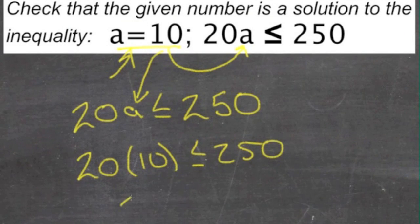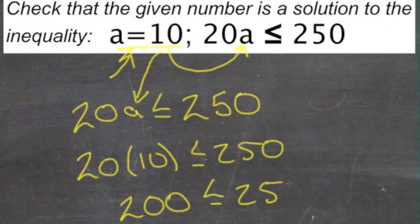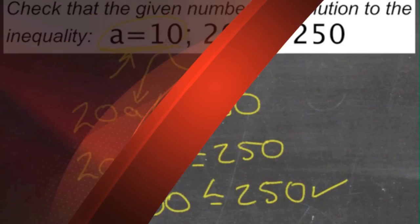20 times 10 is 200. And since 200 is indeed less than or equal to 250, this is a true statement. And our answer, a equals 10, is correct.